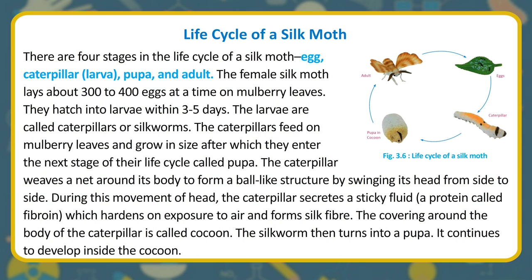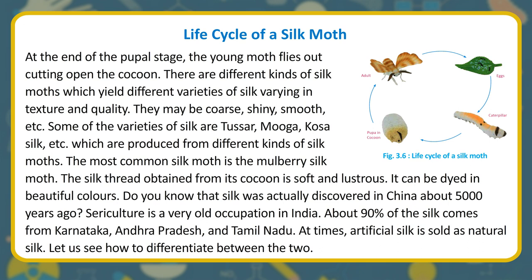Life cycle of a silk moth: There are four stages — egg, caterpillar or larva, pupa, and adult. The female silk moth lays about two hundred eggs at a time on mulberry leaves. They hatch into larvae within 3–5 days. The caterpillars feed on mulberry leaves and grow in size, after which they enter the next stage. The caterpillar weaves a net around its body to form a ball-like structure — the cocoon — by swinging its head from side to side. During this movement, the caterpillar secretes a sticky fluid, a protein called fibroin, which hardens on exposure to air and forms silk fiber. The silkworm then turns into a pupa and continues to develop inside the cocoon. At the end of the pupal stage, the young moth flies out, cutting open the cocoon.